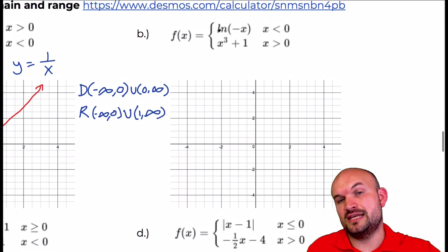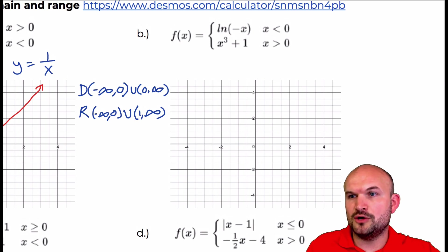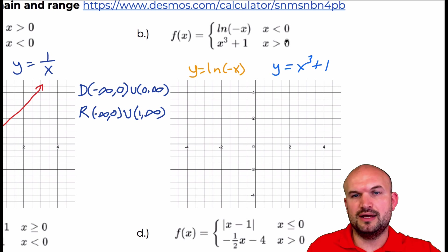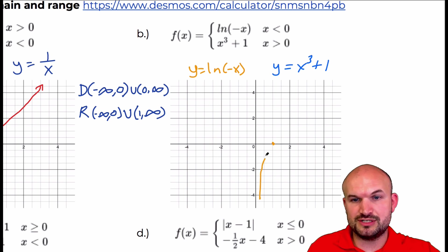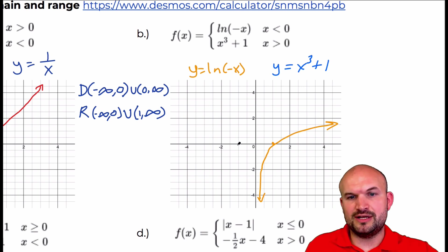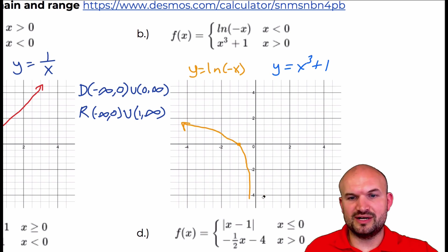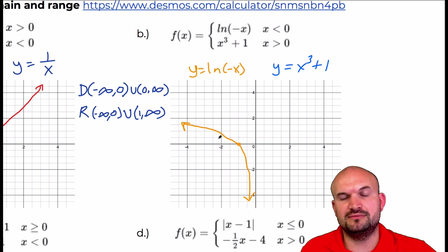The next one is a logarithmic graph with a reflection about the y-axis. We're just going to sketch these individually — y equals ln of negative x, and then graph y equals x cubed plus 1, then look at the restrictions. The logarithmic graph with no transformations looks something like that. If I'm going to reflect it about the y-axis, my new intercept is over here, making a perfect reflection. Since all of it says x has to be less than 0, the whole graph is perfectly fine.